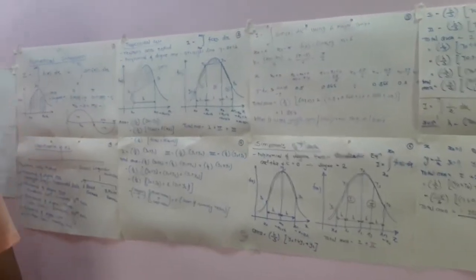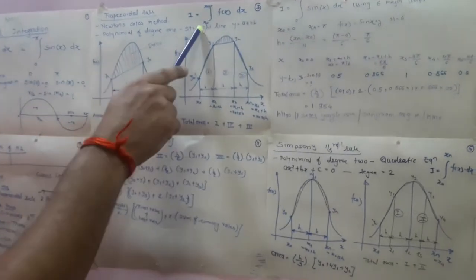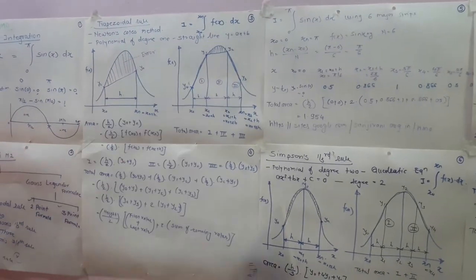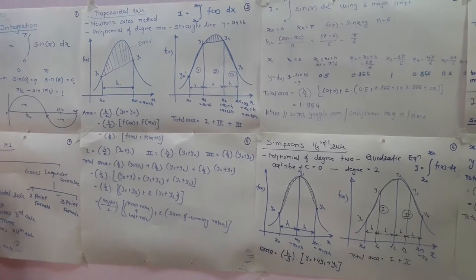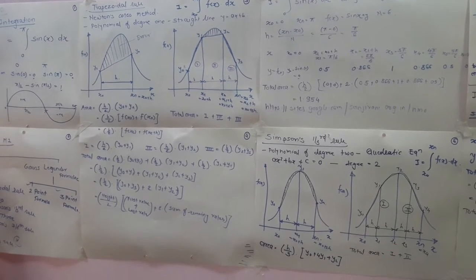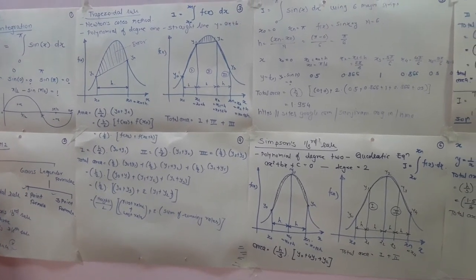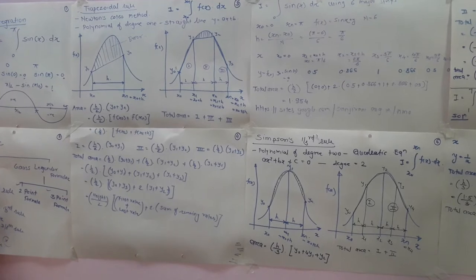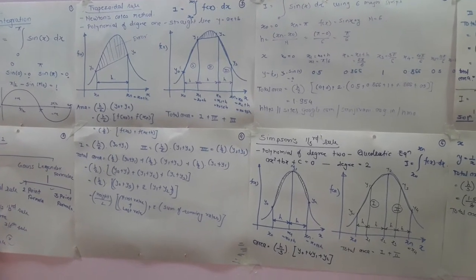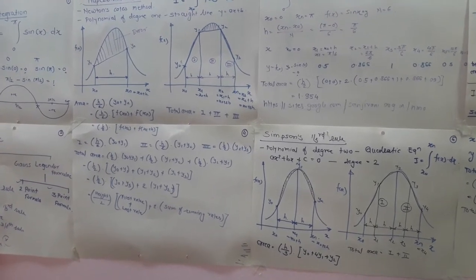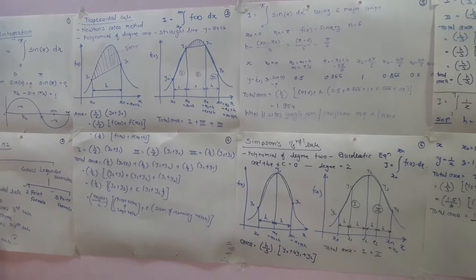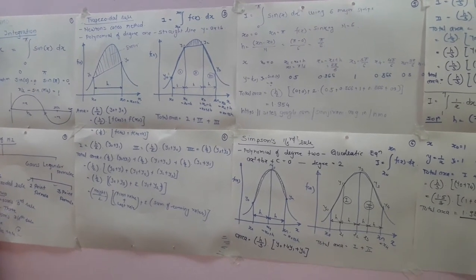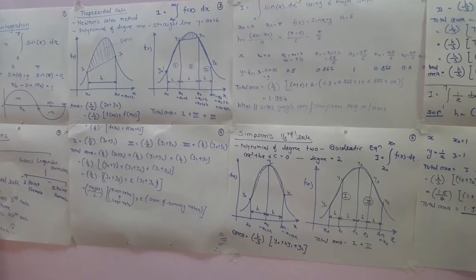Let us see each methodology one by one, starting with the Trapezoidal Rule. If I want to evaluate the integration from x₀ to xₙ of f(x) dx — the Trapezoidal Rule is one of the Newton's Cotes methods where a polynomial of degree 1 is used, that is a straight line in the form y = ax + b, where the maximum index is 1.